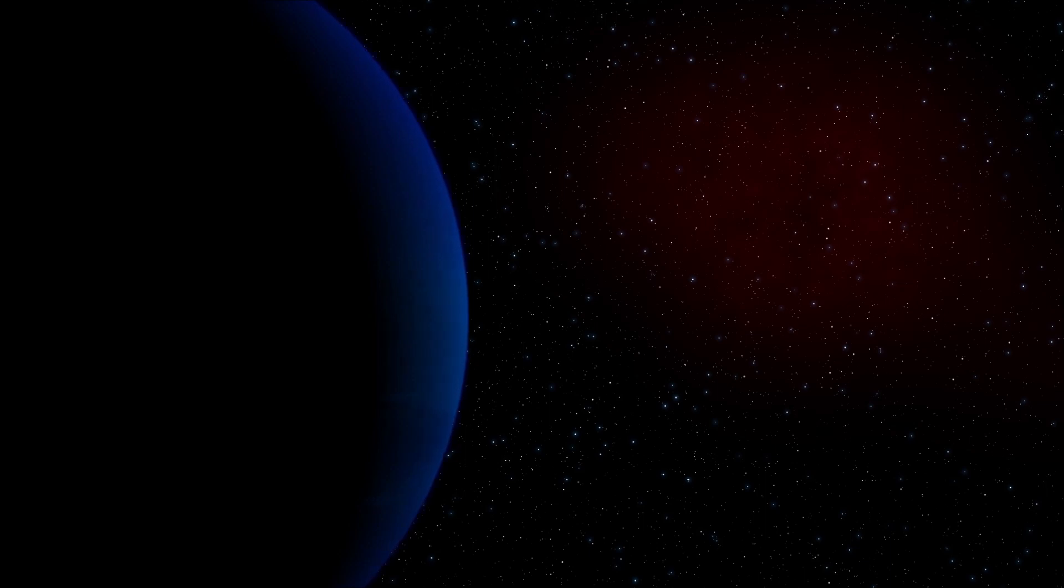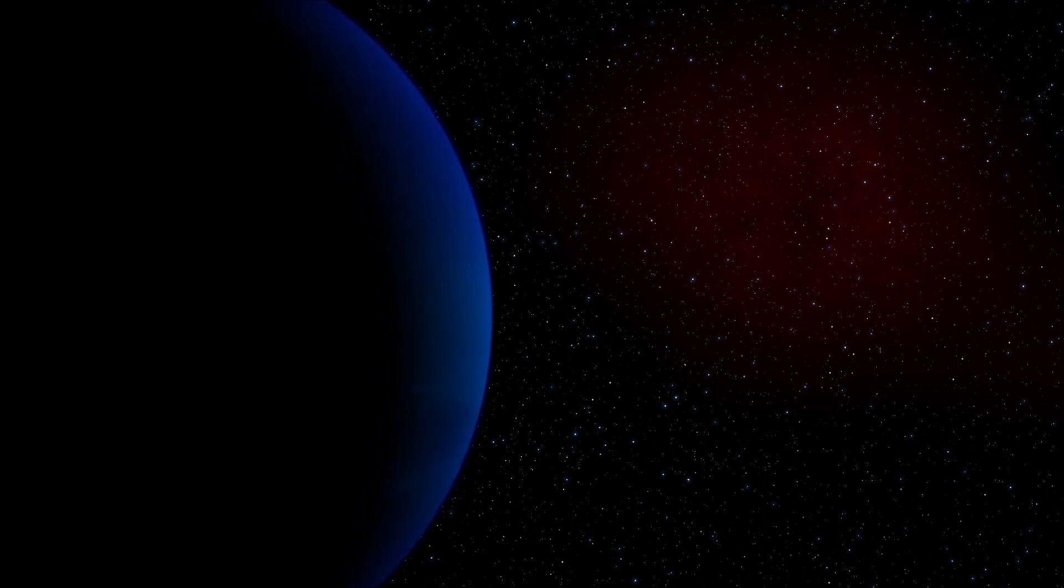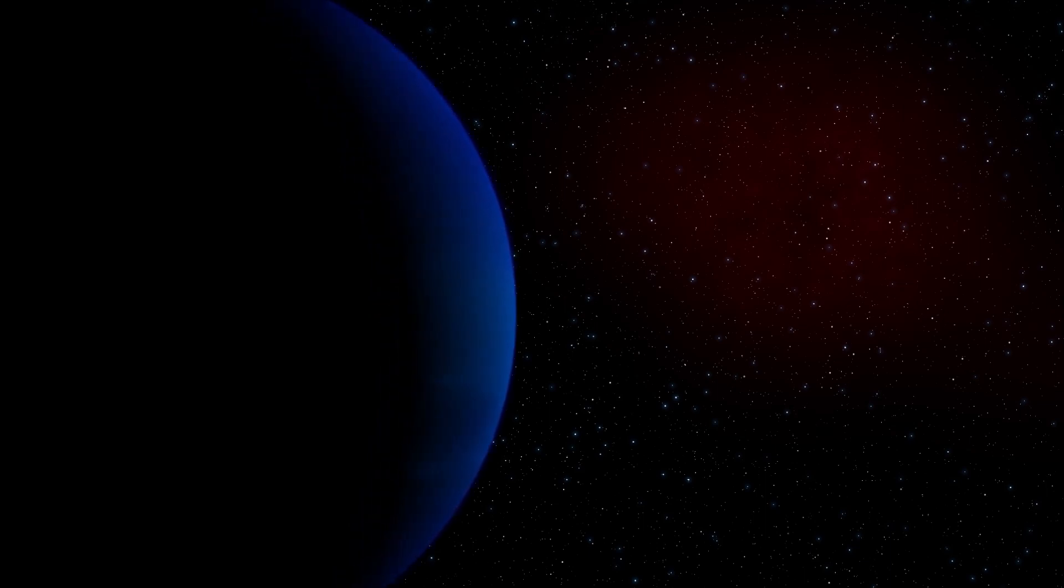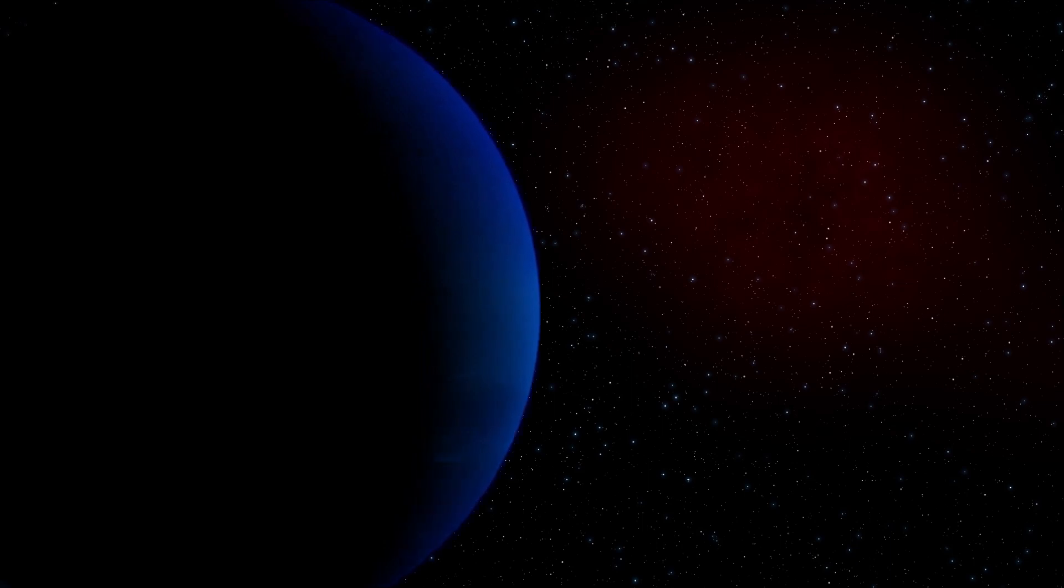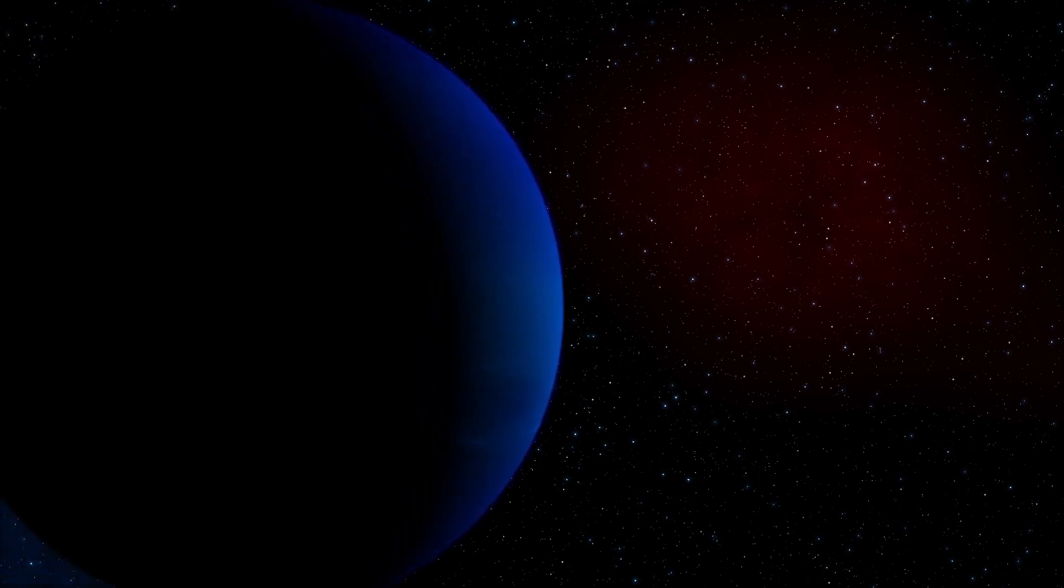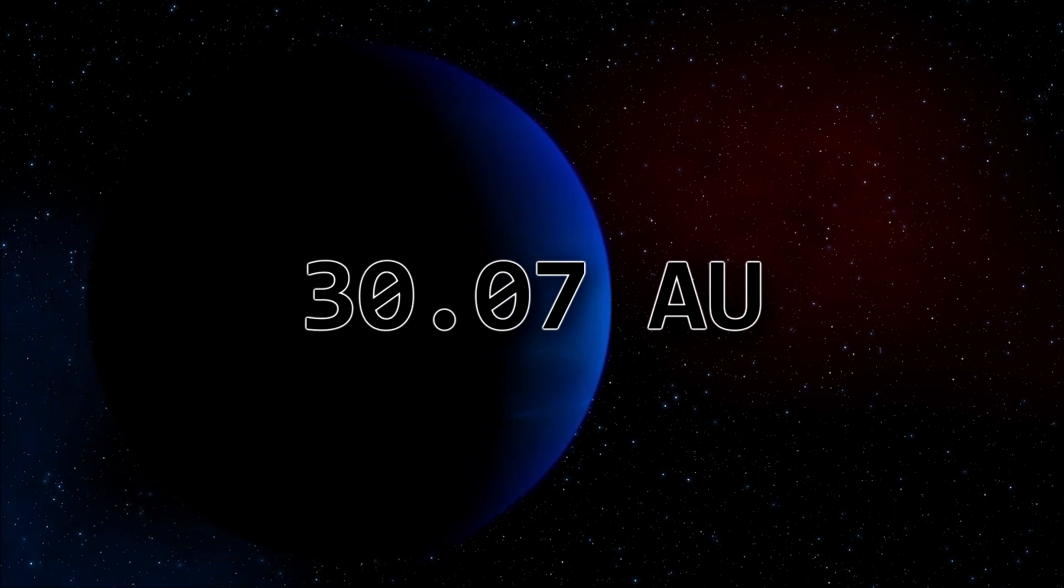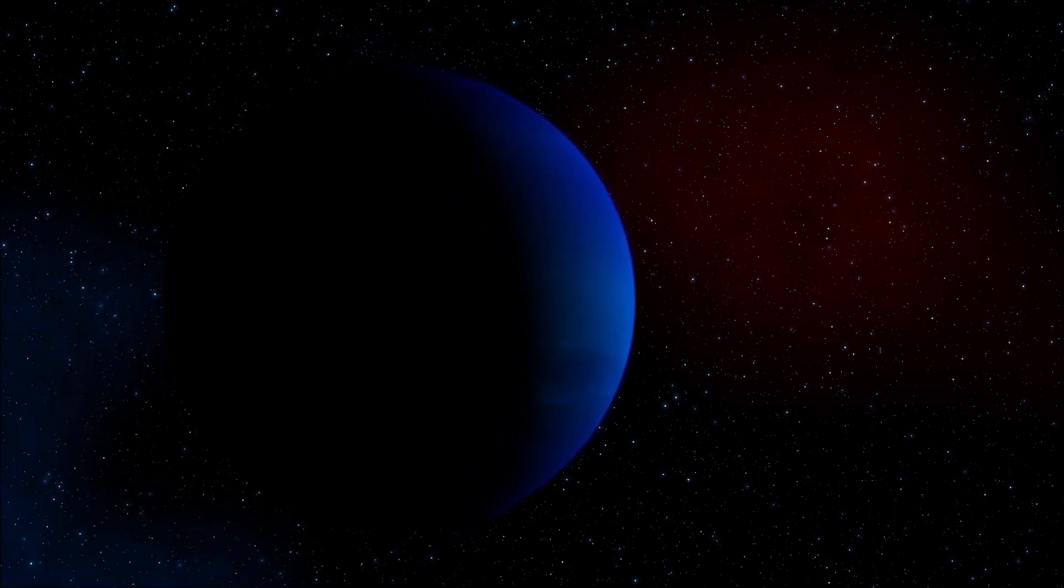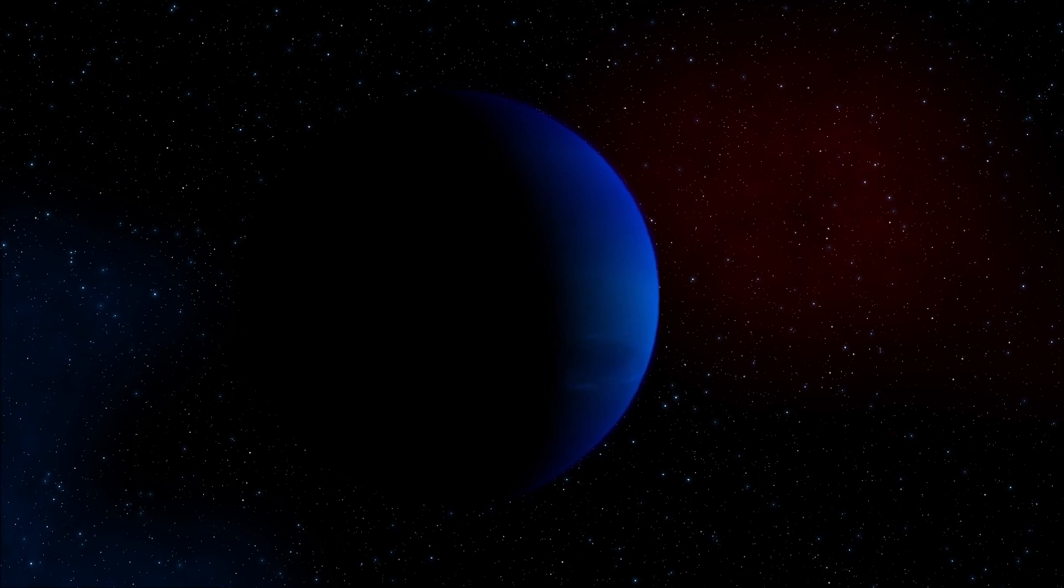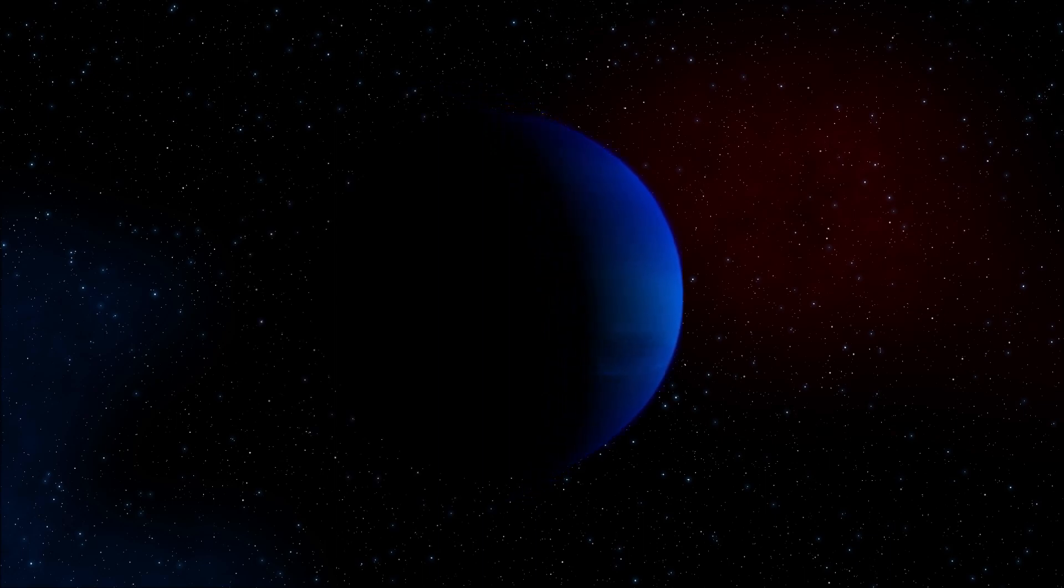To date, Neptune remains the last discovered planet in our solar system. Neptune's orbit is very distant, orbiting the Sun only once every 164 years at a distance of over 30 astronomical units. While Neptune is definitely the last of the planets, it surely is not the last of the solar system.